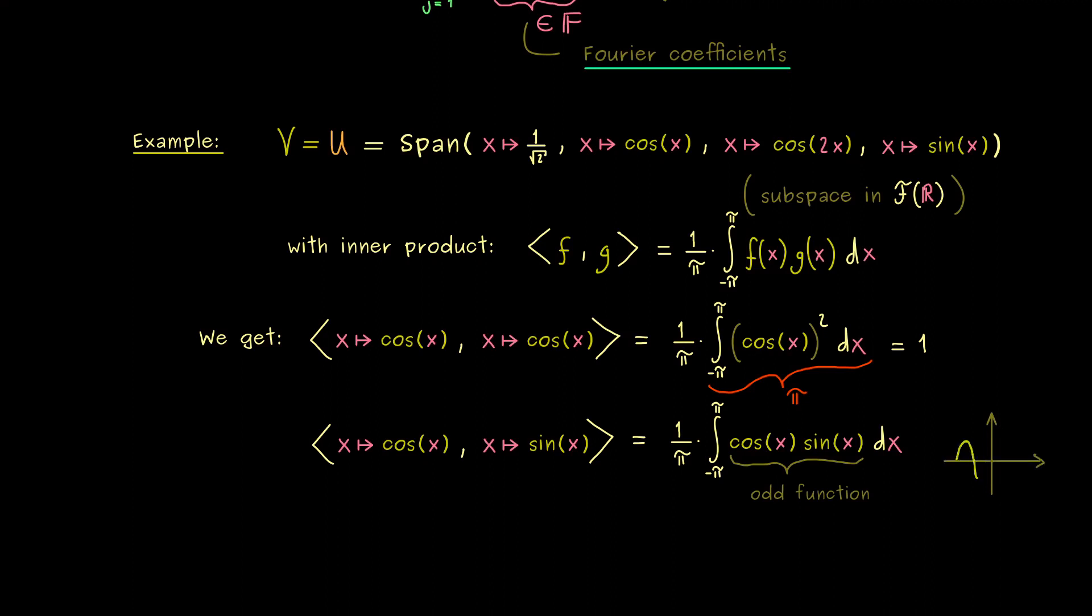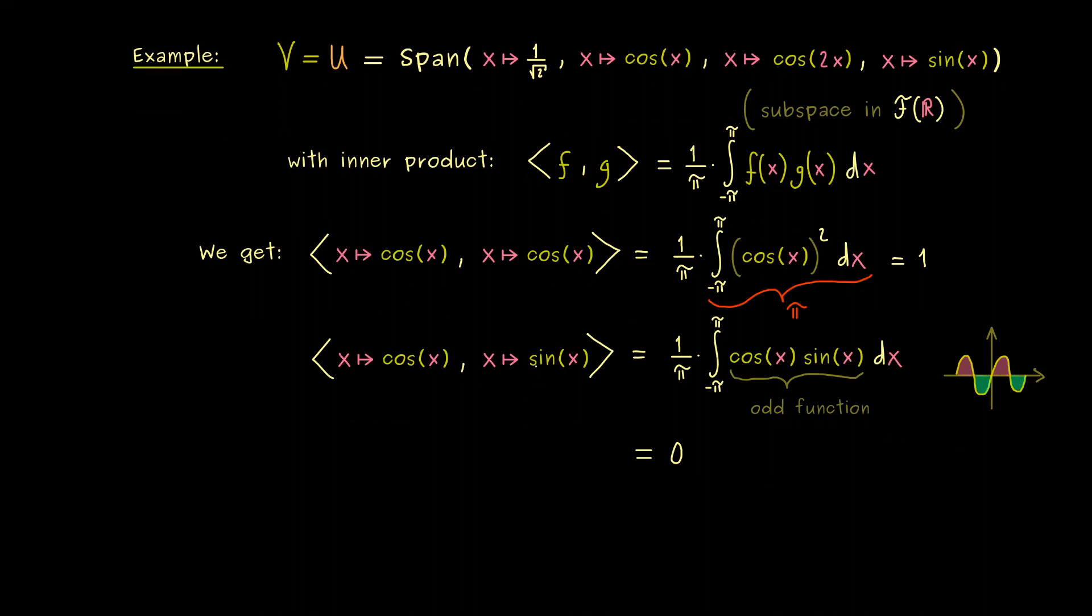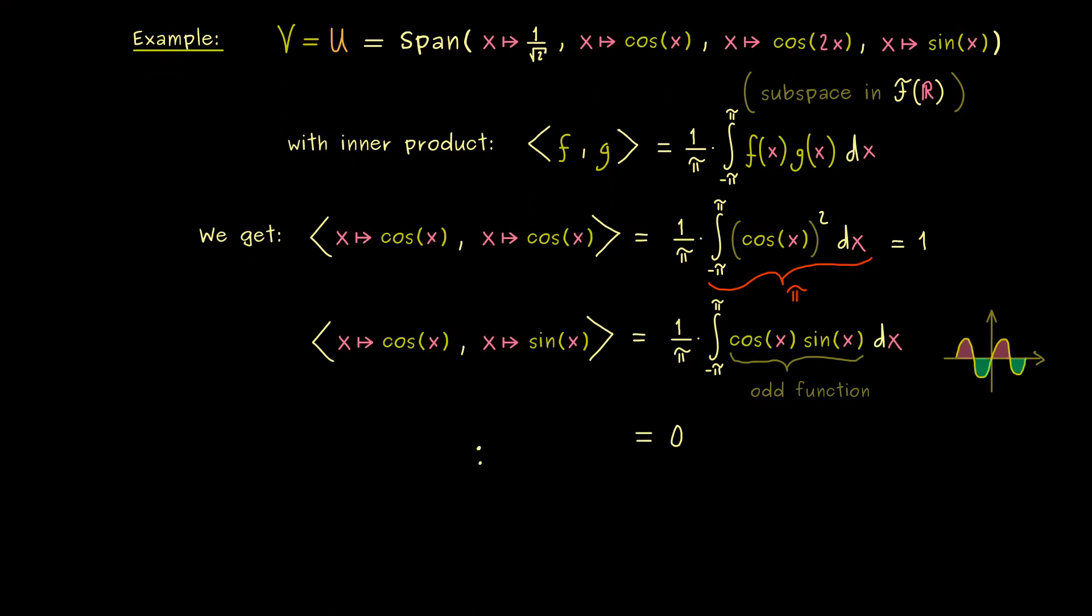Which means that the graph of this function has a nice symmetry. In particular, it's mirrored with respect to the origin. Therefore, since we integrate over a symmetric interval here, the areas will cancel out. So without much calculation we can already conclude that we get out 0 here. So we have orthogonality between these two basis vectors. And now we have to do it for all the other combinations as well. And what we get out is indeed an ONB.